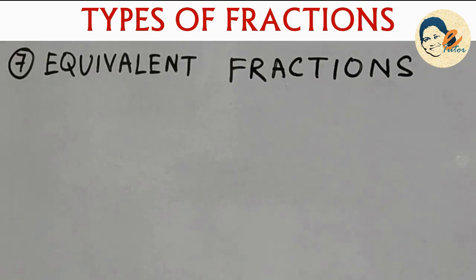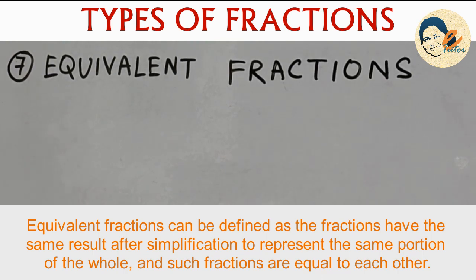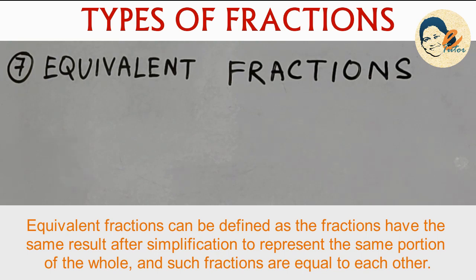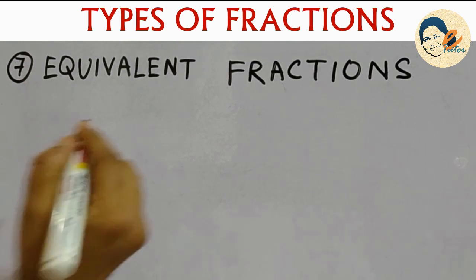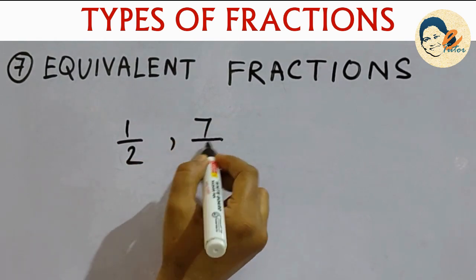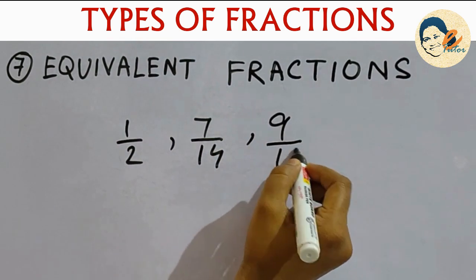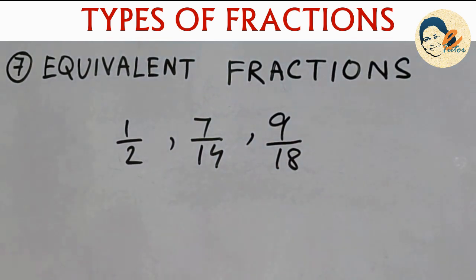Our next type of fraction is equivalent fractions. When two or more fractions have the same result after simplification, those fractions are equal to each other and are called equivalent fractions. For example, 1/2, 7/14, and 9/18.